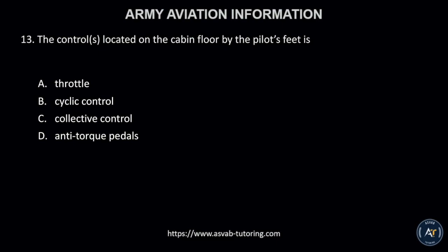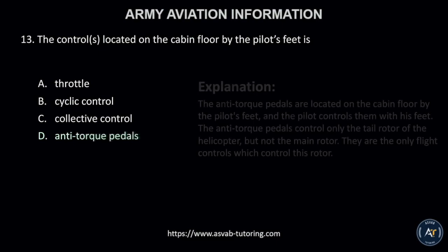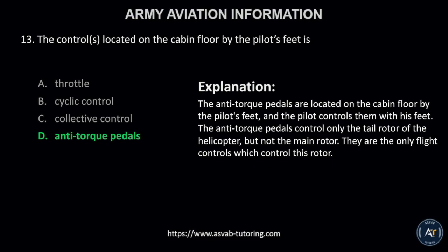Number 13. The controls located on the cabin floor by the pilot's feet is A, throttle; B, cyclic control; C, collective control; or D, anti-torque pedals? The correct answer is letter D, anti-torque pedals. The anti-torque pedals are located on the cabin floor by the pilot's feet, and the pilot controls them with his feet. The anti-torque pedals control only the tail rotor of the helicopter, but not the main rotor. They are the only flight controls which control this rotor.